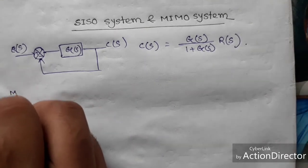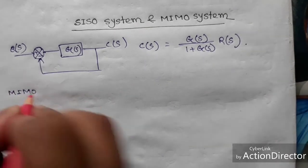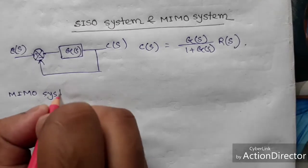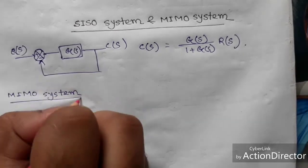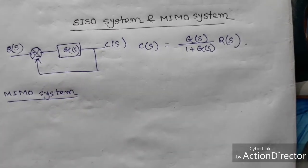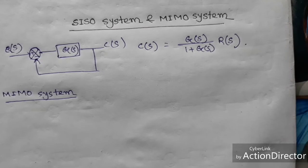Now we come to the MIMO system means multiple input multiple output. When two or more inputs act on a system and each input can be treated independently of the other, then this system will be MIMO system.